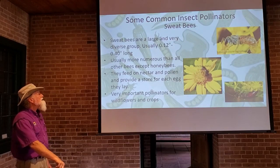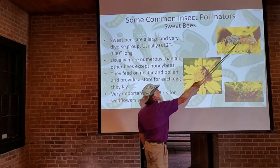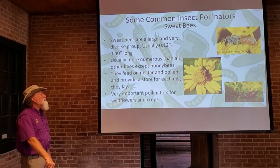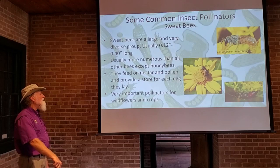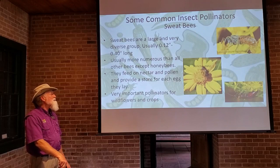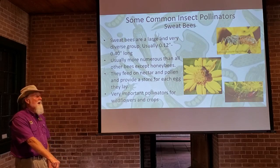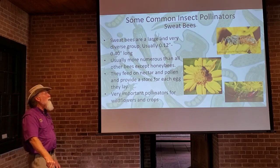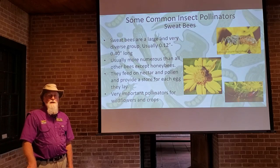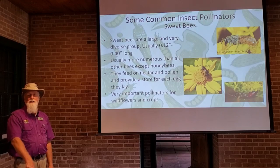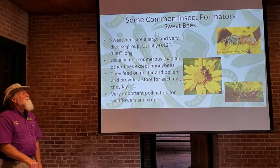Sweat bees are actually quite small — less than half an inch — and you'll often see them on flowers collecting nectar and pollen to take back and use as food for their young. A lot of times they'll make pollen balls, lay an egg on the ball, and leave the larva to hatch and develop on its own. They're important pollinators, especially of wildflowers. They're called sweat bees because they'll go in search of salts, and since sweat is salty, they're attracted to it.